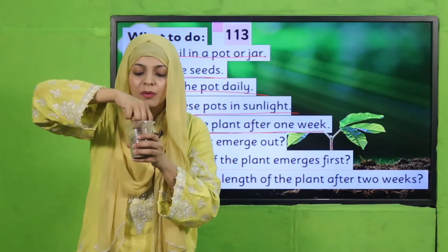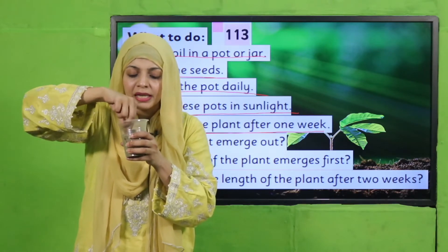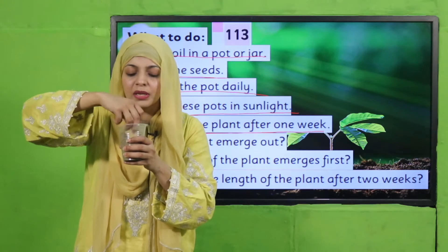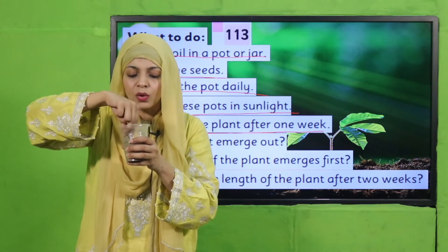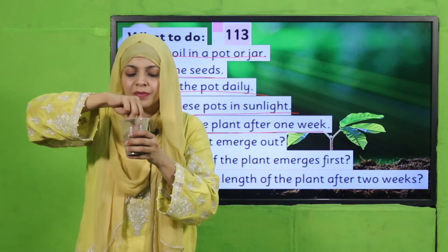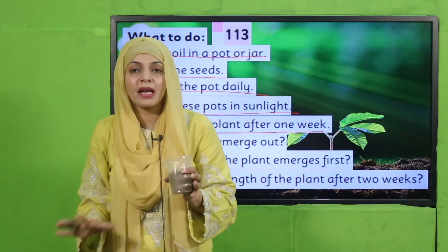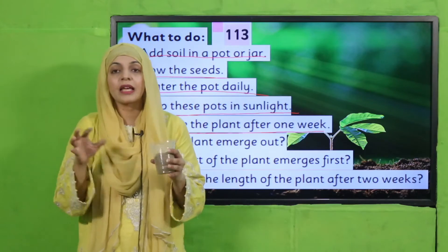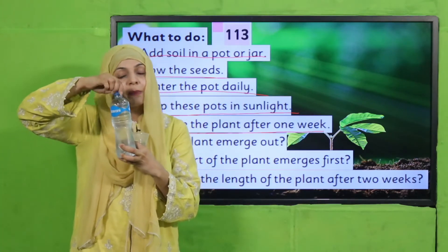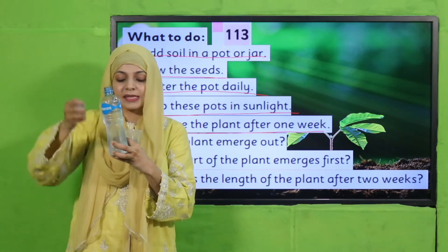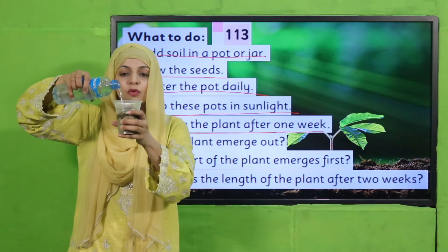We will sow the seeds and then cover them with mud. I will soak them in water first. When you add seeds, you give them water. I have put water in a bottle to water the pot in front of you — we will give it a little water.